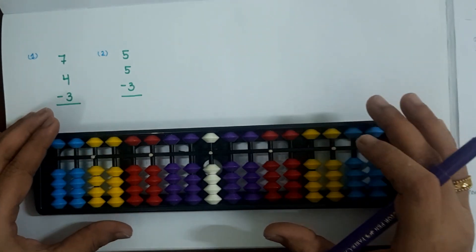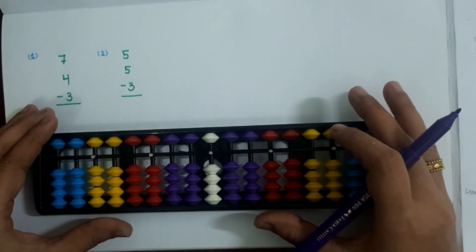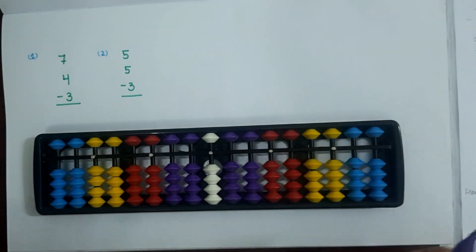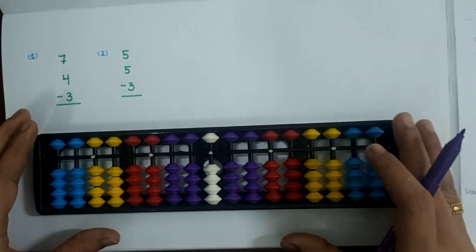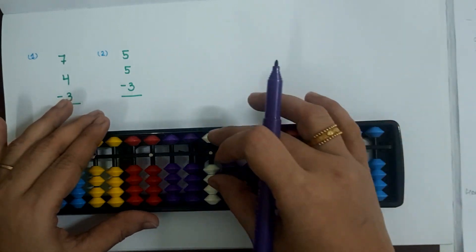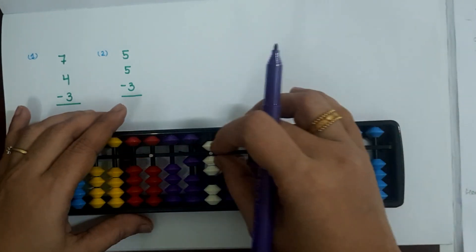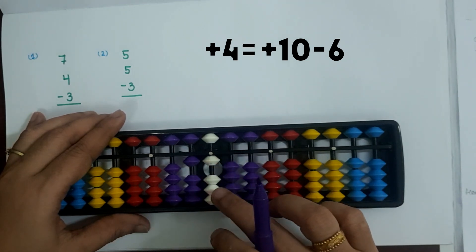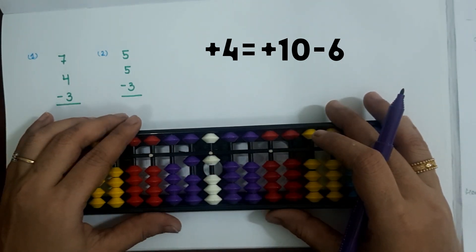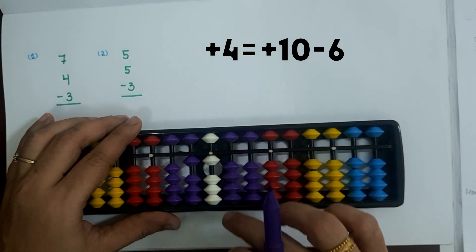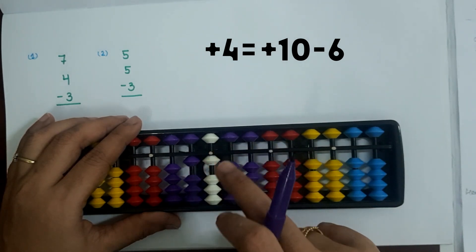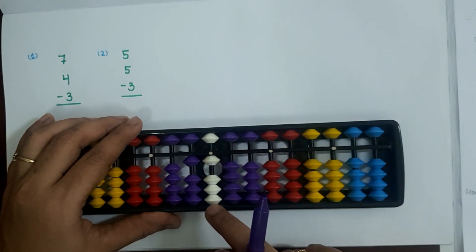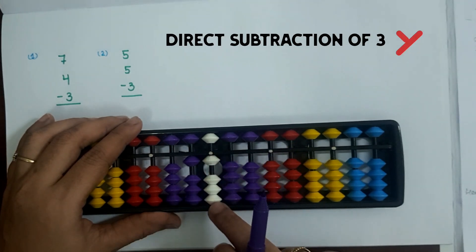In this video we are going to learn one more big friend subtraction formula. Why do we need to learn this formula? See here we have two sums. The first sum is 7 plus 4 minus 3. So 7 plus 4 is plus 10 minus 6 — here I used the big friend addition of 4. Then we need to subtract 3. At one slot only one bead is touching the value bar, so direct subtraction of 3 here is not possible.